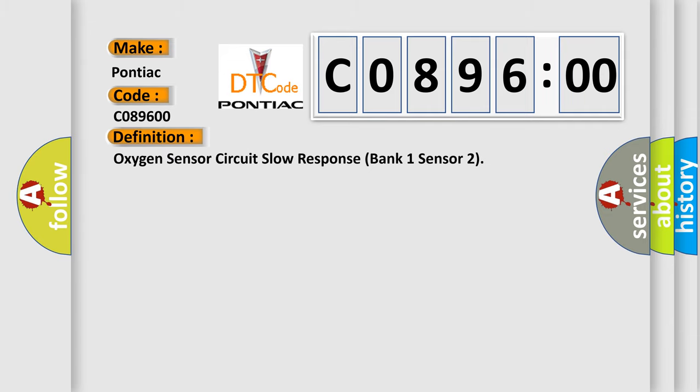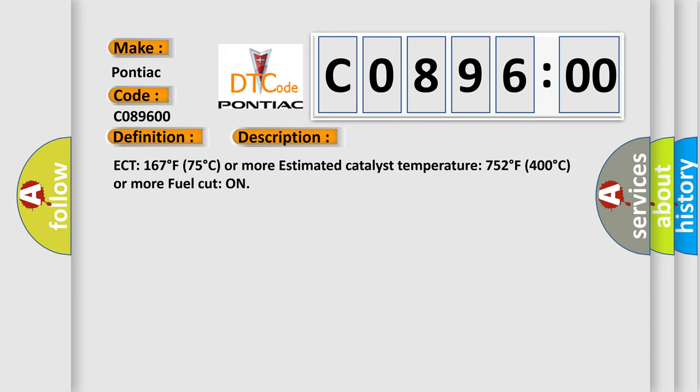The basic definition is: Oxygen sensor circuit slow response bank 1 sensor 2. And now this is a short description of this DTC code: ECT 167 degrees Fahrenheit, 75 degrees Celsius or more, estimated catalyst temperature 752 degrees Fahrenheit, 400 degrees Celsius or more, fuel cut on.